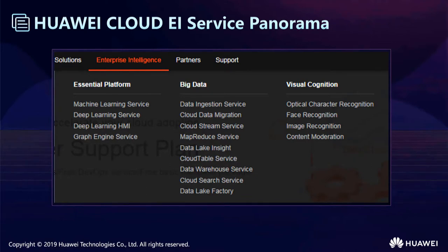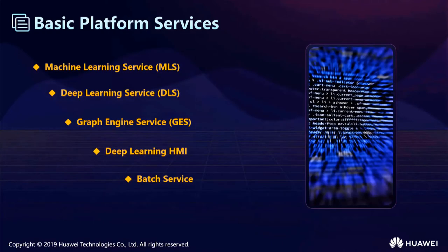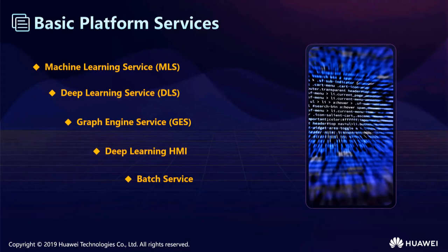Next we will introduce them one by one. First, let's see the basic platform services. It mainly includes the machine learning service, deep learning service, graph engine service, deep learning HMI, and batch service. A machine learning service can help users quickly discover data patterns and build predictive models through machine learning techniques, serving as a predictive analytics solution. Deep learning service is a one-stop deep learning platform service based on Huawei's powerful, high-performance computing. It has a large number of built-in optimized network models and algorithms.